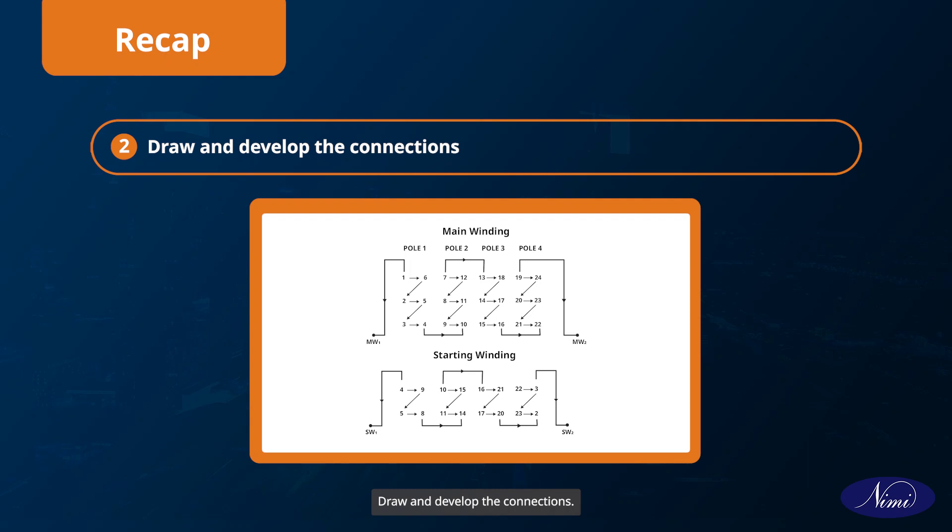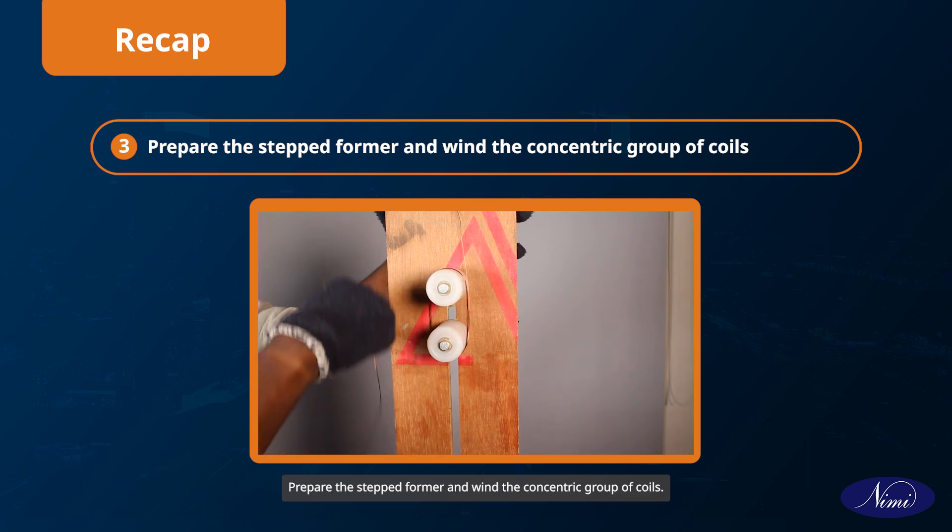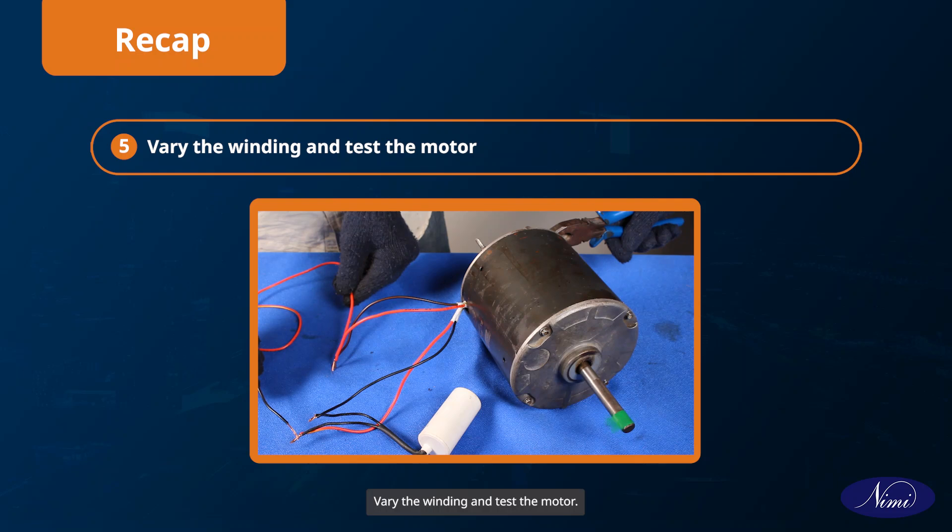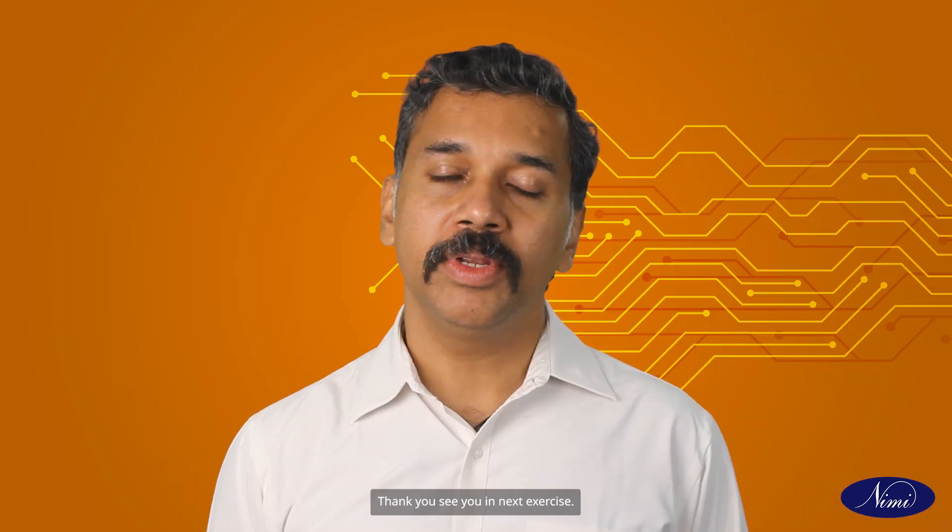Draw and develop the connections, prepare the stepped former and wind the concentric group of coils, lay out and connect the group coils, vary the winding and test the motor. Thank you, see you in the next exercise.